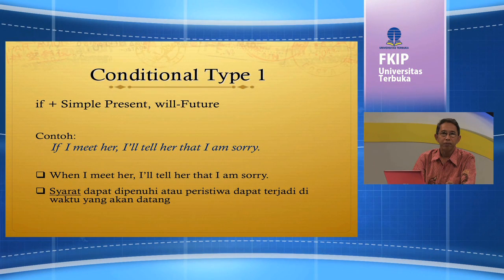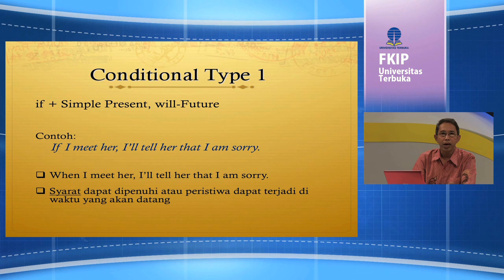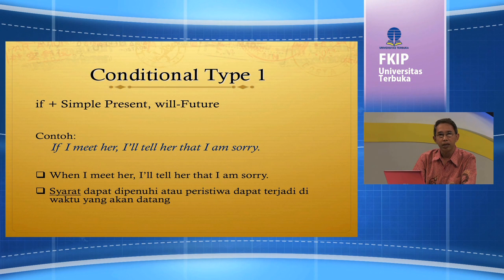Dari bentuknya, tipe satu mengikuti pola if clause dengan simple present, diikuti dengan future tense menggunakan will. Contoh: 'If I meet her, I'll tell her that I'm sorry.' Di sini terlihat ada satu syarat atau kondisi yang harus dipenuhi. Syaratnya adalah hanya jika saya bertemu dengannya, maka saya akan meminta maaf kepadanya. Jadi, saya belum bertemu dengannya dan belum meminta maaf kepadanya. Ini akan terjadi di waktu yang akan datang, pada saat saya bertemu dengannya.